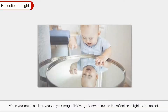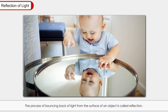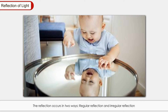Reflection of light: When you look in a mirror, you see your image. This image is formed due to the reflection of light by the object. The process of bouncing back of light from the surface of an object is called reflection. Due to the reflection of light, the image is formed. Reflection occurs in two ways: regular reflection and irregular reflection.